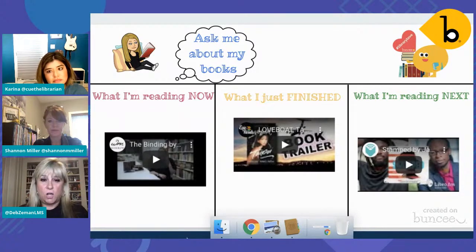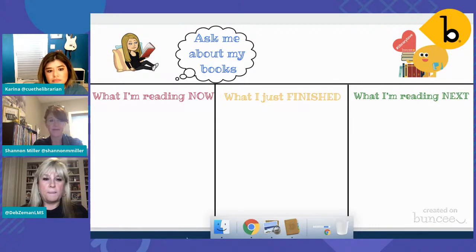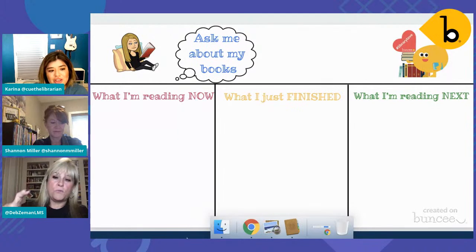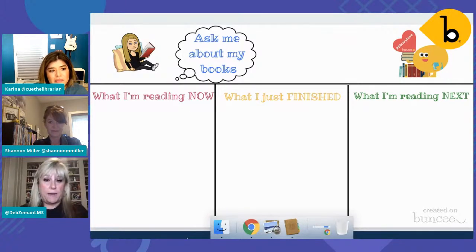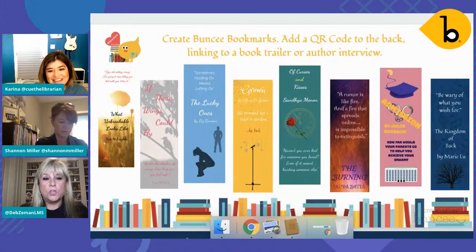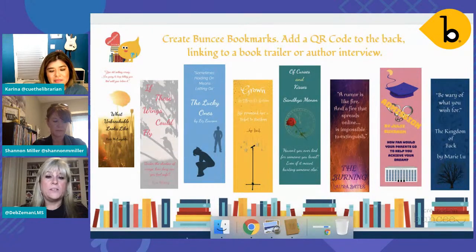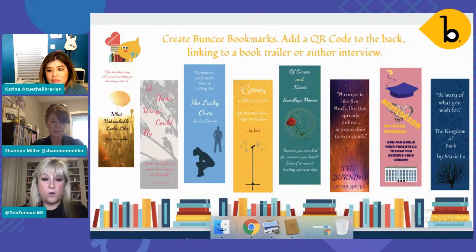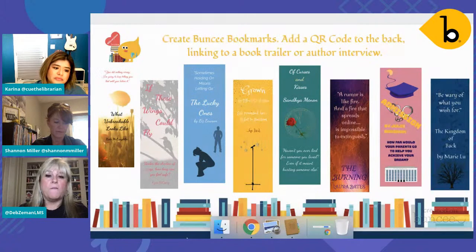Another one I came up with: you can embed it in Wakelet, Classroom, or Schoology — it's what I'm reading, what I just finished, and what I'm reading next. I put in book trailers or a book talk. The great thing is I can go back into Buncee and quickly edit it, and it'll update in real time in Wakelet or Schoology because I'm reading a book every day. You can also print it, laminate it, write with dry erase what you're doing, or print out little book covers and tape them on. I'm also all about creating bookmarks — you can print them out with a QR code on the back so kids can watch a book trailer or author interview.